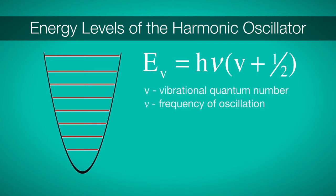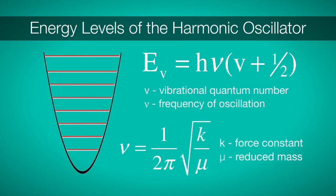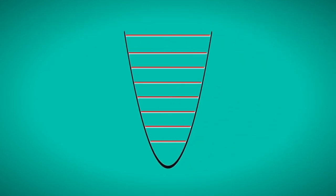In this expression, nu is the frequency of the oscillation, which is related to the reduced mass and the force constant of our molecule by the relation nu equals one over two pi times the square root of k over mu.